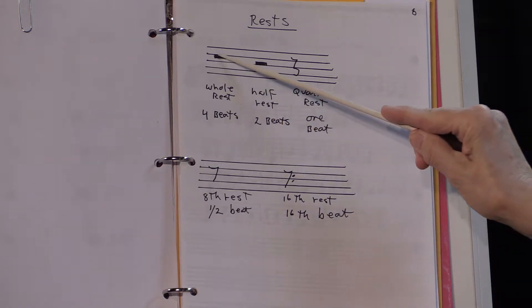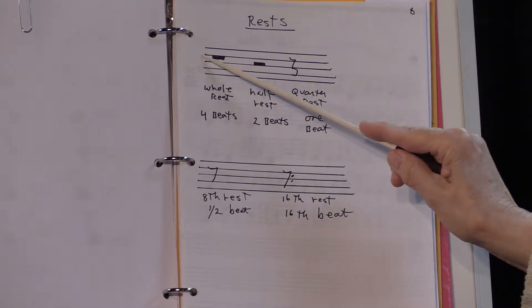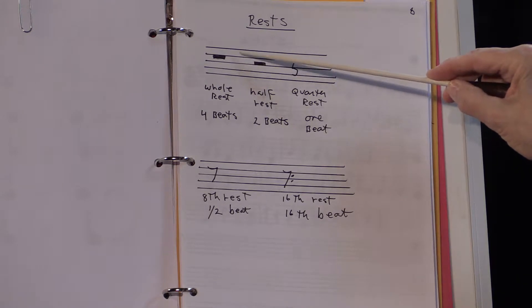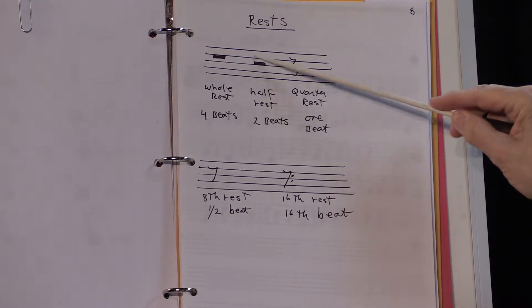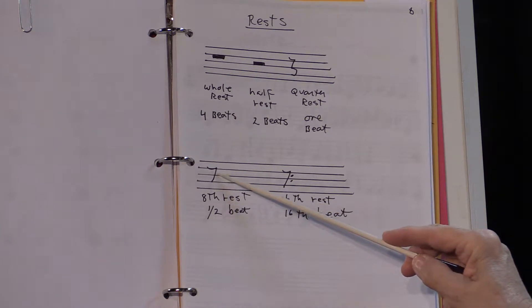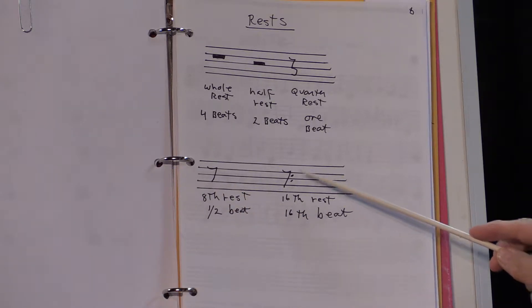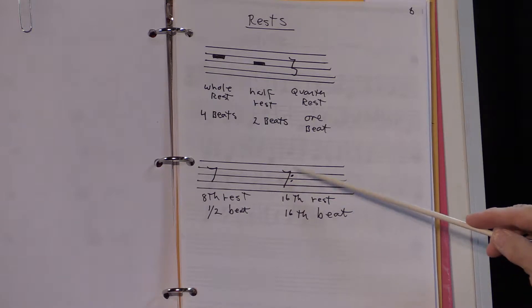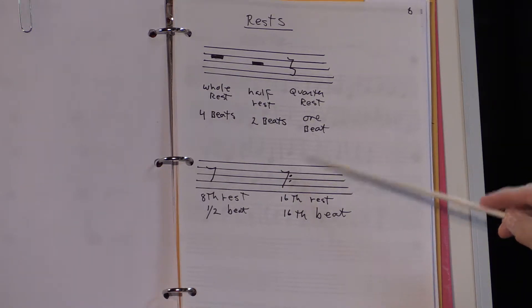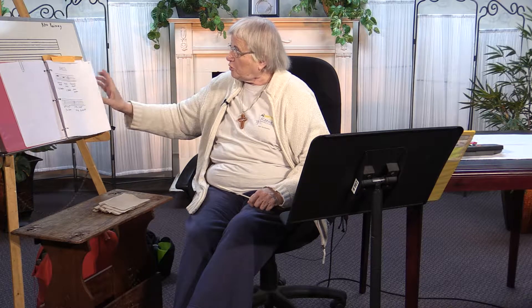Remember that you count rests exactly like you count regular beats. Here's a four-beat rest — when you have a rest, you do not play. It hangs down from the fourth line. The half rest pops up from the third line — it's just two beats. This is the quarter rest. This is the eighth rest, and you notice the one flag, just like on an eighth note. For the sixteenth rest, there are different ways of writing it — you can use two flags, or sometimes two dots behind it. There are different ways of doing it, but basically you can't go wrong.